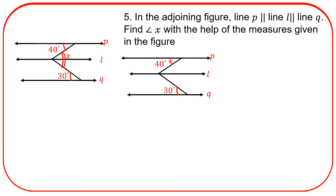Therefore, this angle and this angle are equal — interior alternate angles. Therefore, this angle is 40 degrees. Now, L is parallel to Q and this is a transversal. Therefore, this angle and this angle are equal to each other — 30 degrees. Reason: interior alternate angles.